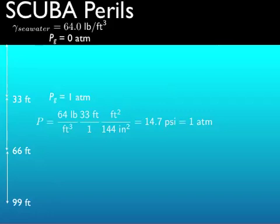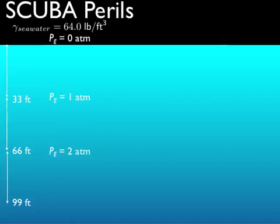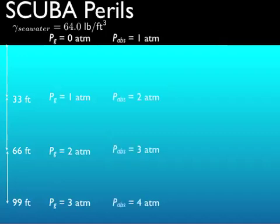Now it continues to increase linearly. So at 66 feet, we're at two atmospheres pressure. At 99 feet, we are at three atmospheres pressure. So pressure increases linearly with depth, as we've talked about. If we talk about pressure in terms of absolute pressure now, all that means is we have a different datum. So now atmospheric pressure is one atmosphere. And at 33 feet, we're at two atmospheres, and so on.